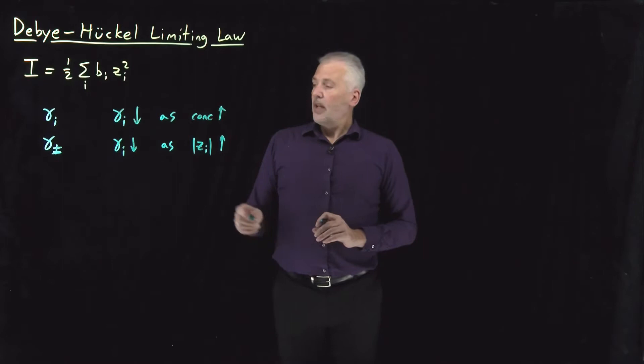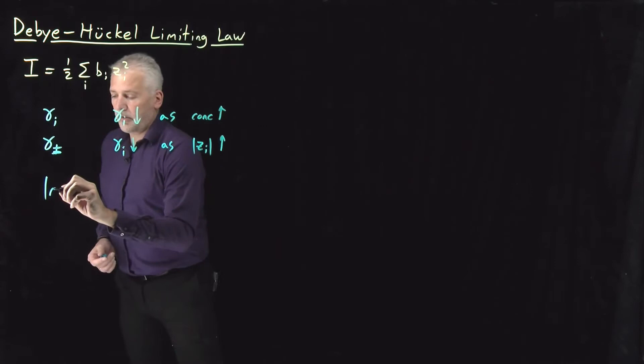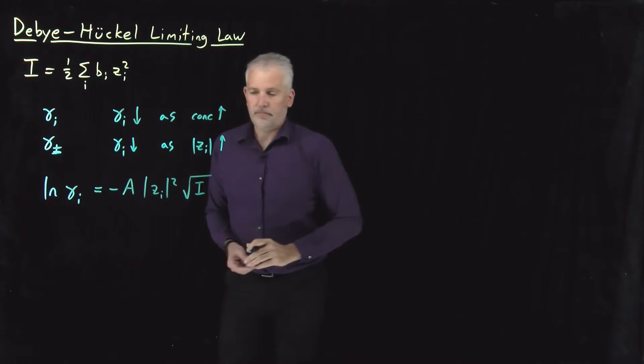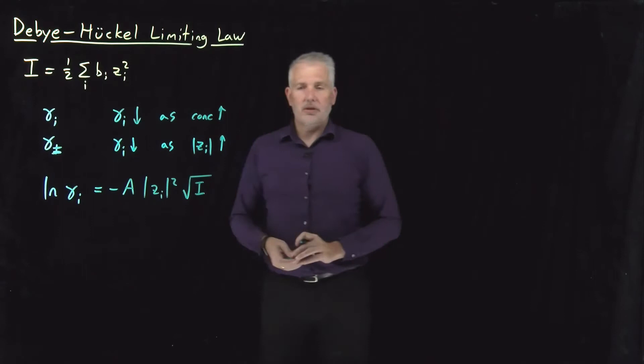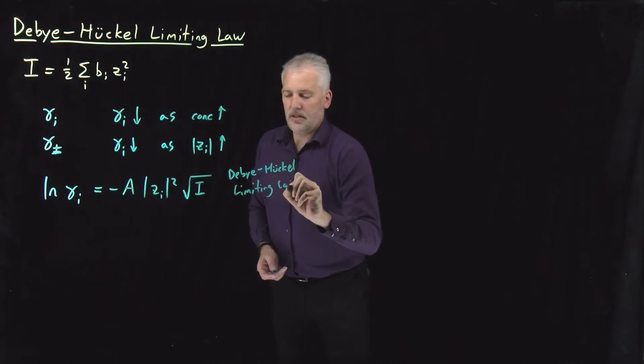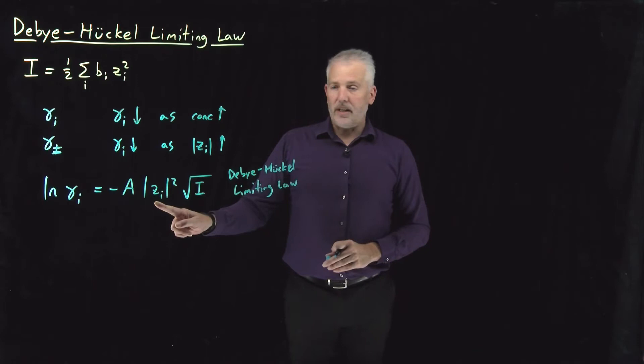Those two things we expect should be true. And in fact, if we look for a relationship that describes exactly how that works, we get this result, which is called the Debye-Huckel limiting law. This result is an equation that allows us to predict using the ionic strength, using the charge of an ion, exactly what the activity coefficient is going to be.